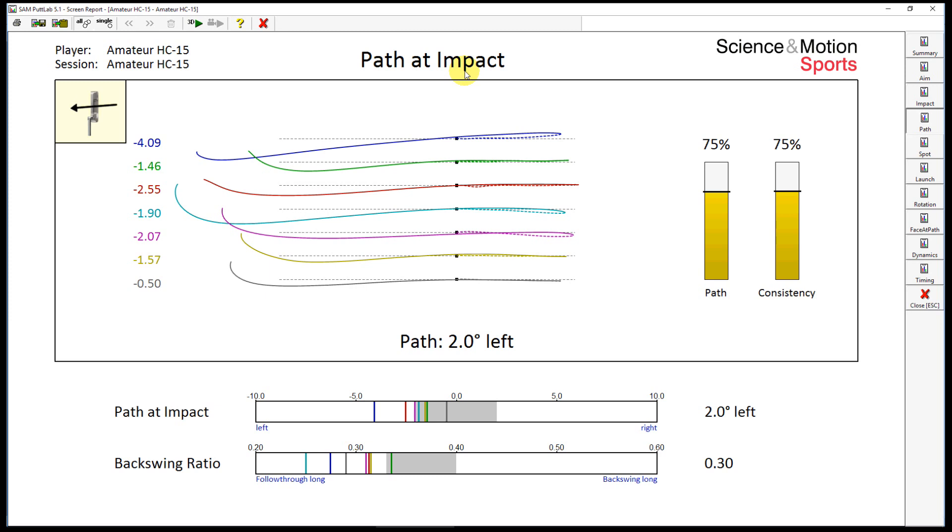This is Christian Marquardt from Science in Motion. In this video I will talk about the path direction at impact in the SAM PuttLab data, which is the same as the horizontal angle of attack of the putter to the ball.